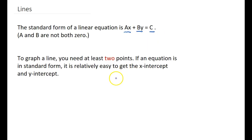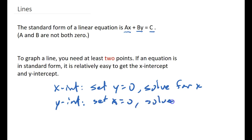To graph a line, you need at least two points, and if an equation is in standard form, it's pretty easy to get the x and y intercepts. To get the x-intercept, you're going to set y equal to zero and solve for x. To get the y-intercept, you're going to set x equal to zero and solve for y.